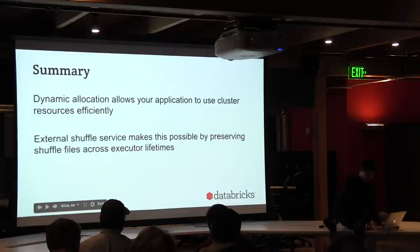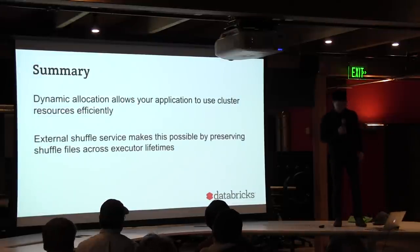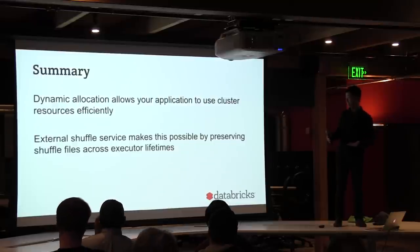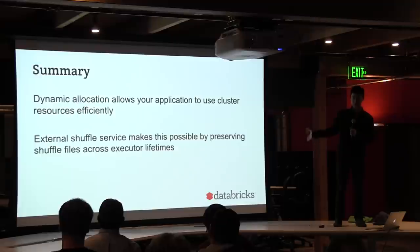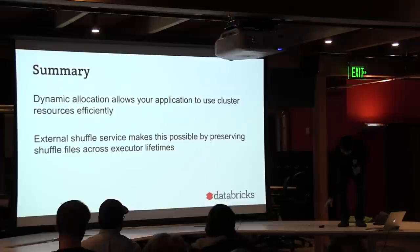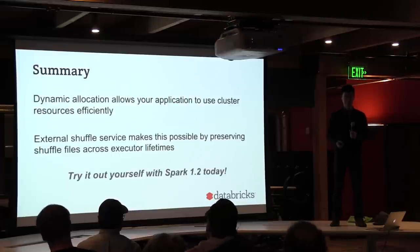In summary: dynamic allocation lets your application use cluster resources more efficiently. The external shuffle service makes this possible because we no longer lose shuffle files when we kill executors. Try it out today. Any questions?